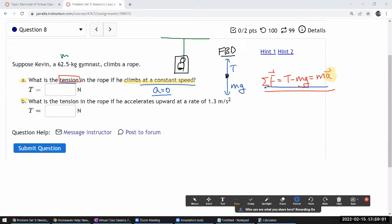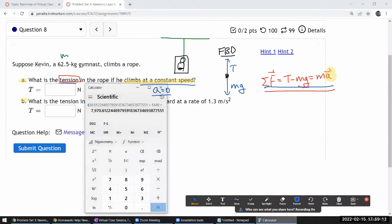So staring at this expression what we should be saying is, oh, so the tension is equal to the weight so that they add up to zero. So the weight of the gymnast should be 62.5 times 9.8, 613 newtons.